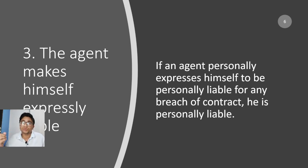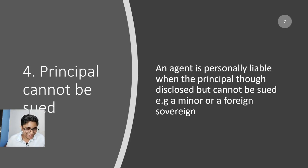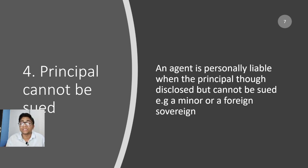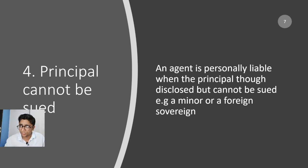Next is when the principal cannot be sued. There are situations where the principal cannot be sued — for example, a foreign sovereign or a minor. A minor cannot be sued, so who will be sued? It is going to be the agent. If you are suing a foreign sovereign, you are essentially suing an entire nation, so again it is going to be the agent who is liable.